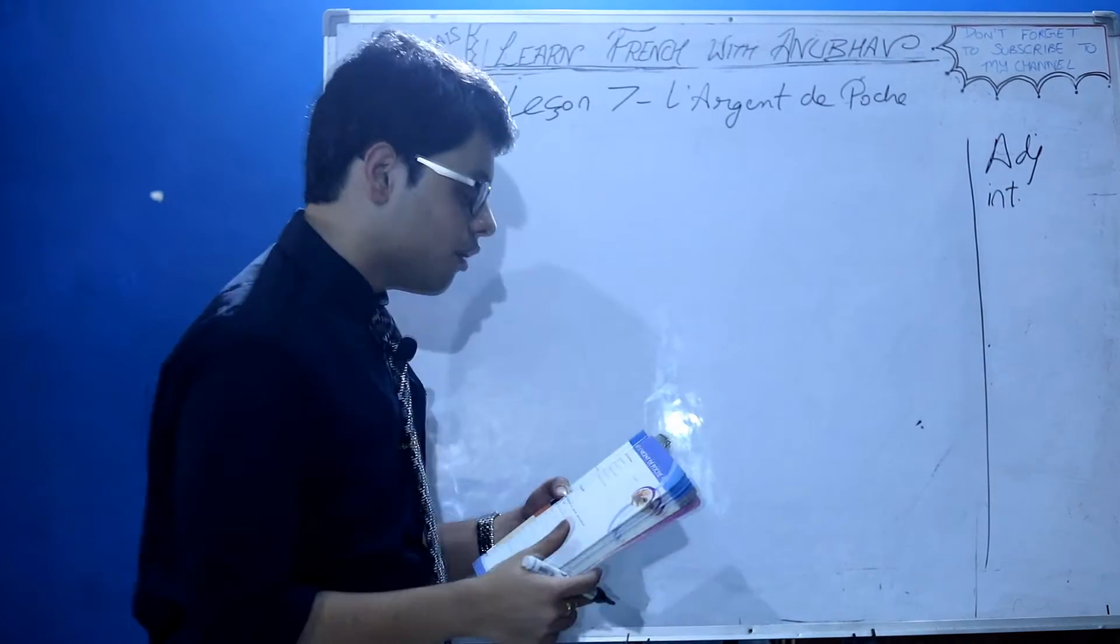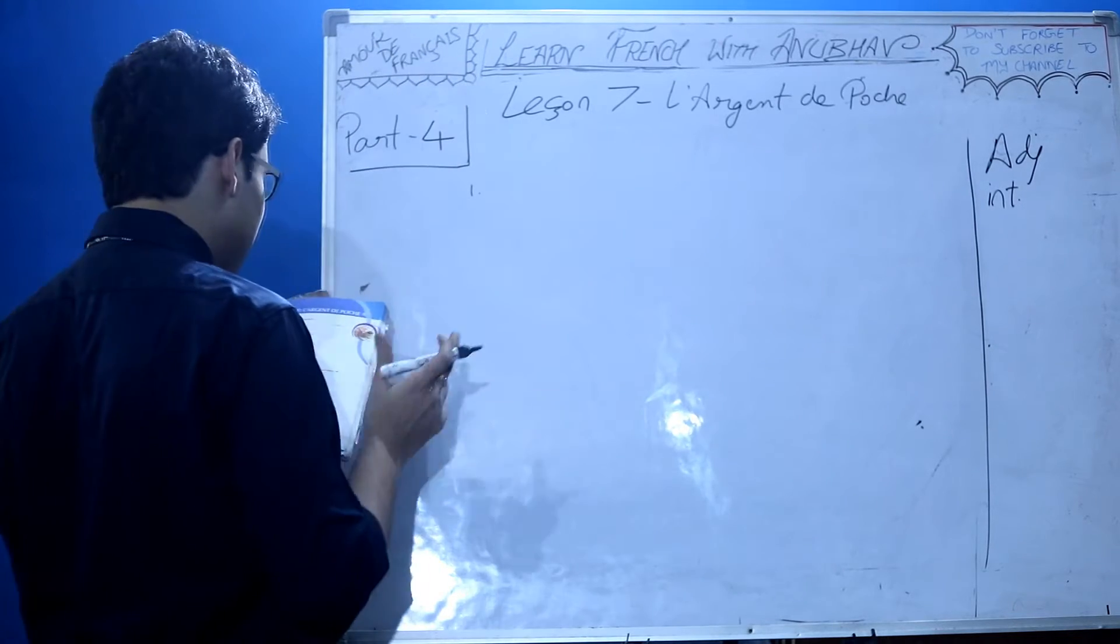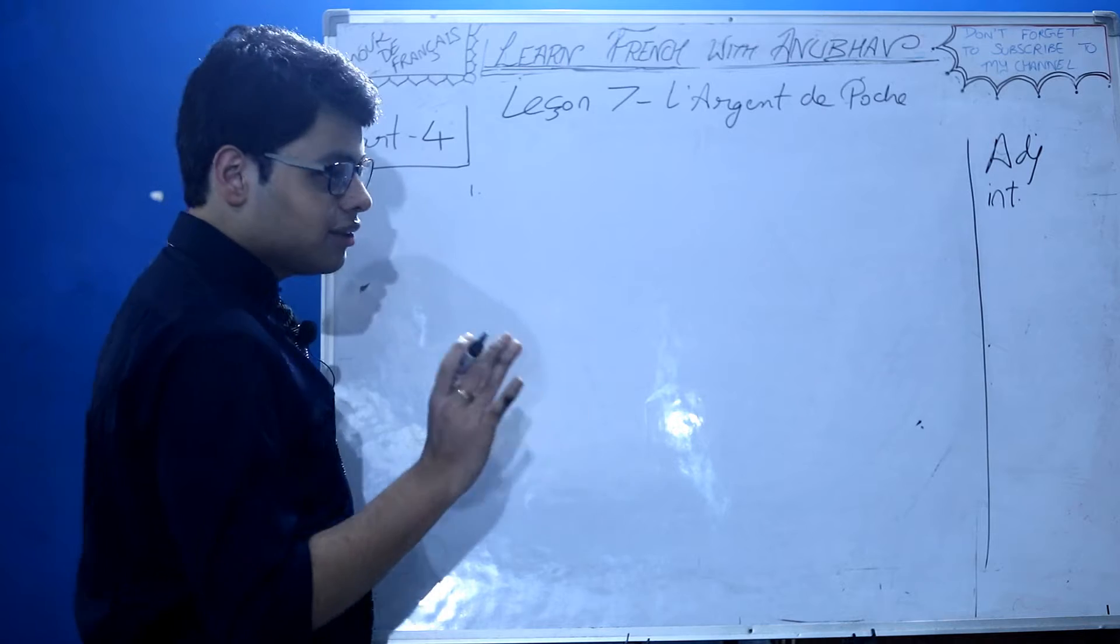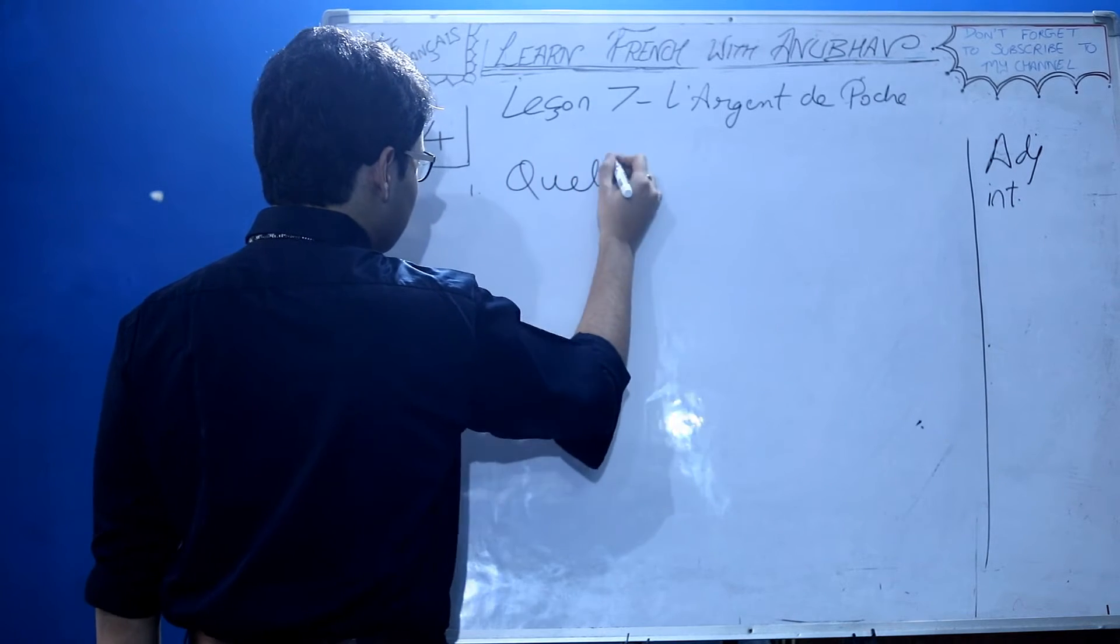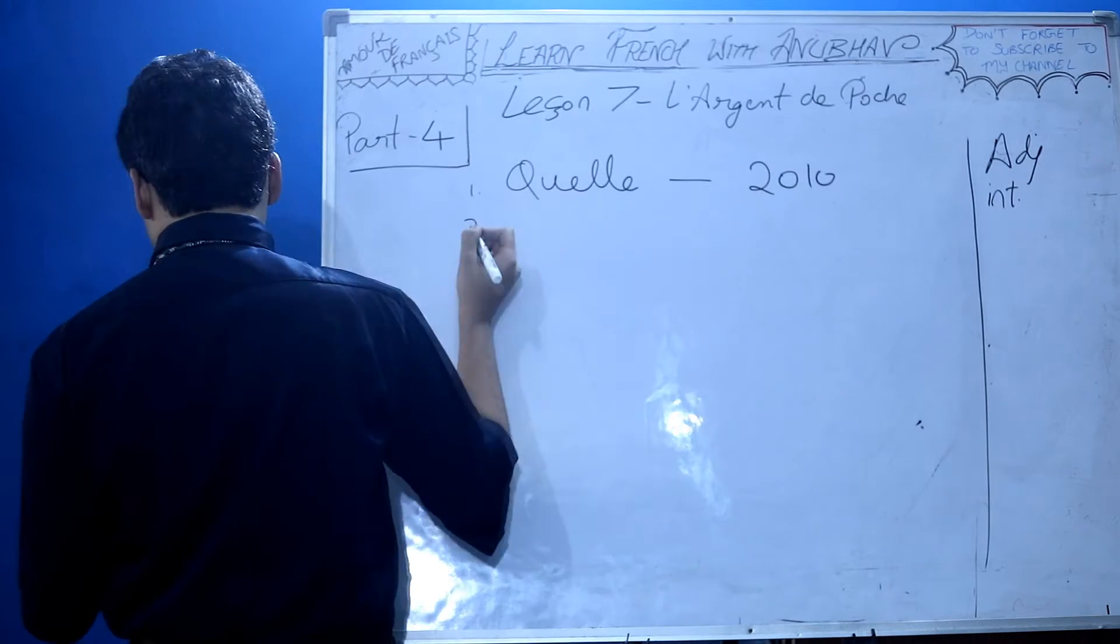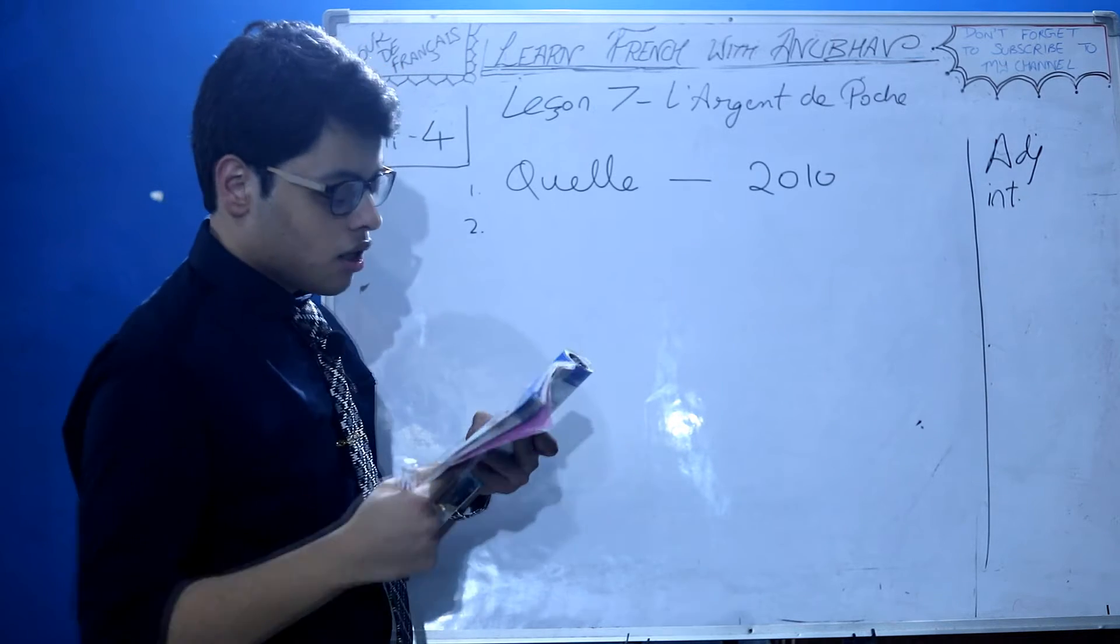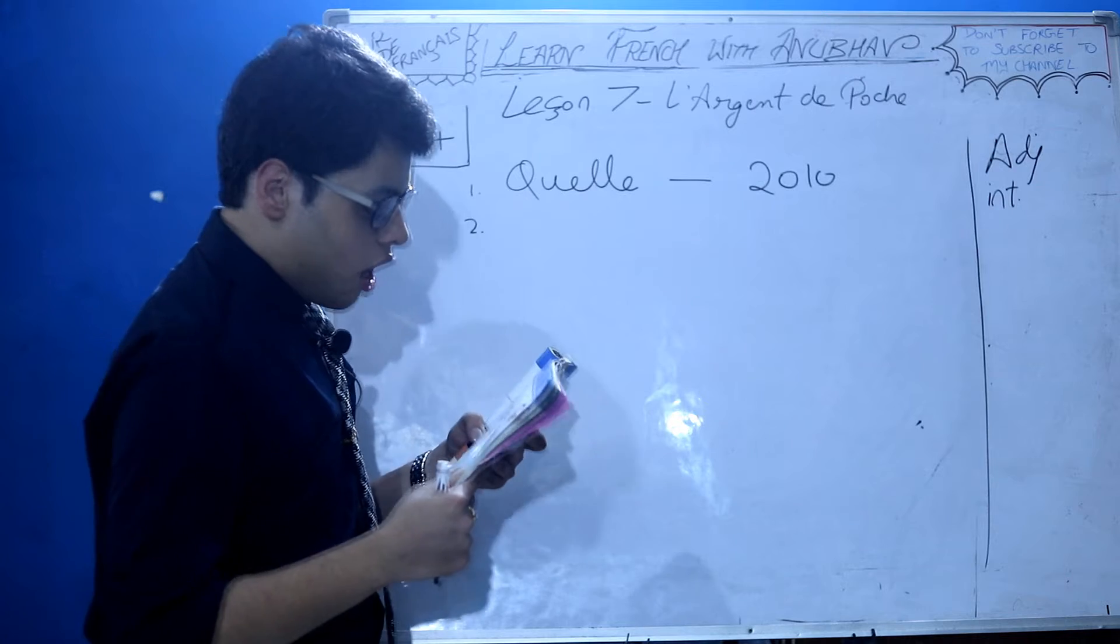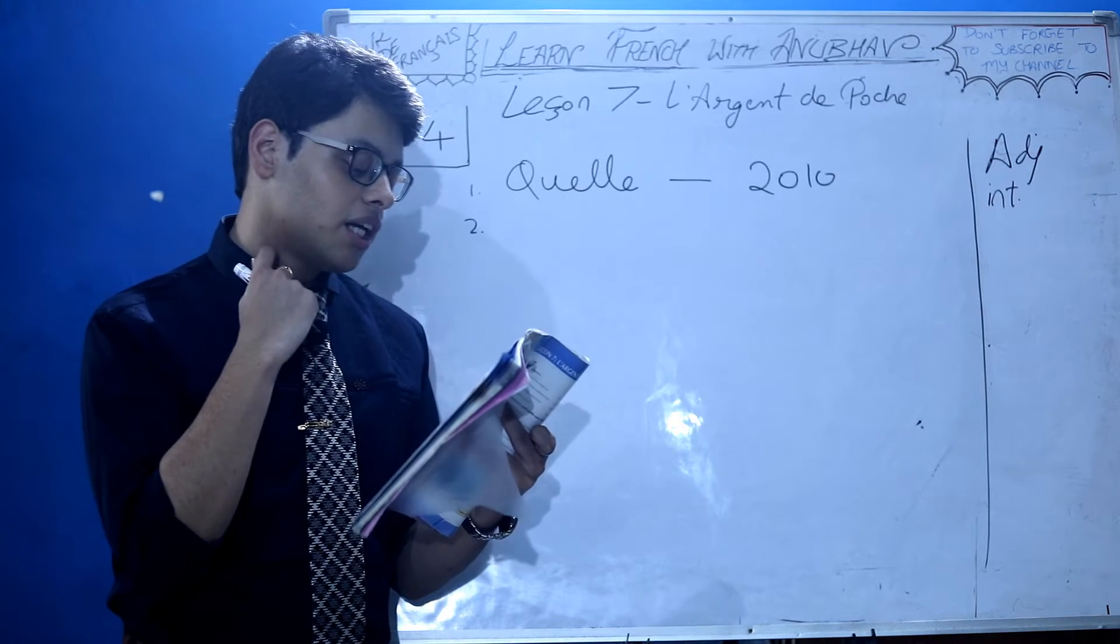First: Ce modèle date de quelle année? Année is feminine singular, so quelle. Answer: 2010. Second: Quel kilométrage a-t-elle fait? How much distance has it traveled? Kilométrage is masculine singular, so quel. Answer: 63,000 kilometers.